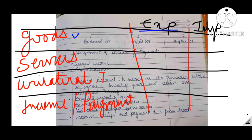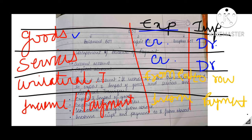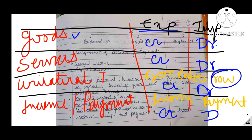Now an important point is which export or import we write on the credit or debit side. I have made a table for this. When we export goods, we receive foreign exchange — there is an inflow — so we write it on the credit side. When there is an import, foreign exchange flows out, so that is recorded on the debit side. For services, they have a similar nature to goods: when we receive services we record it on the debit side, and when we provide services we record it on the credit side.